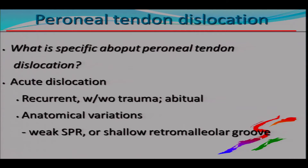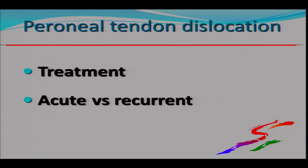What's specific about the peroneal tendon dislocation? We talk about acute dislocation or recurrent dislocation, which can be with or without trauma and can be habitual. There are some anatomical variations in the area, like a weak superior peroneal retinaculum or a shallow groove.